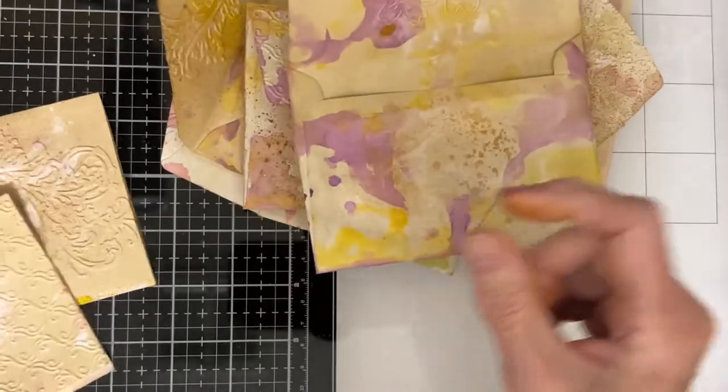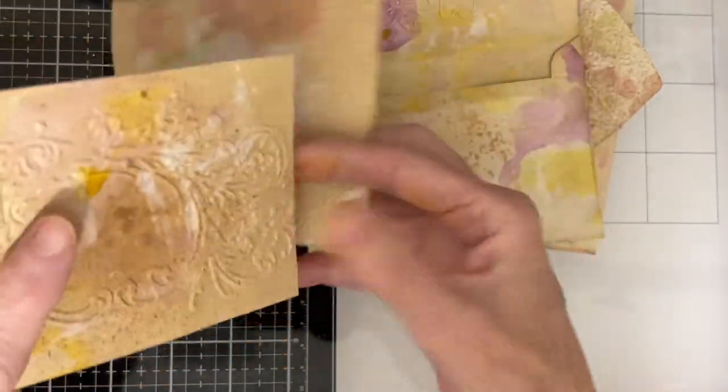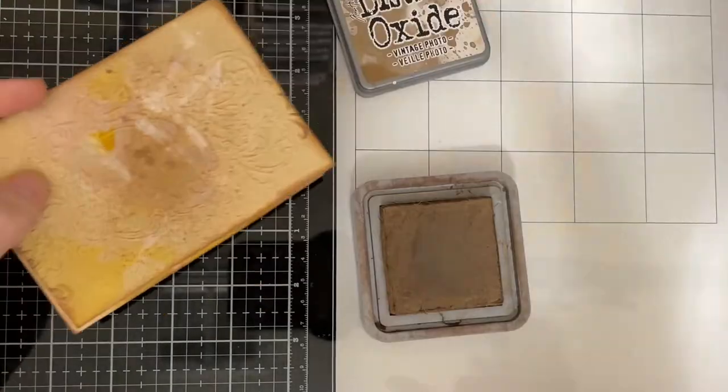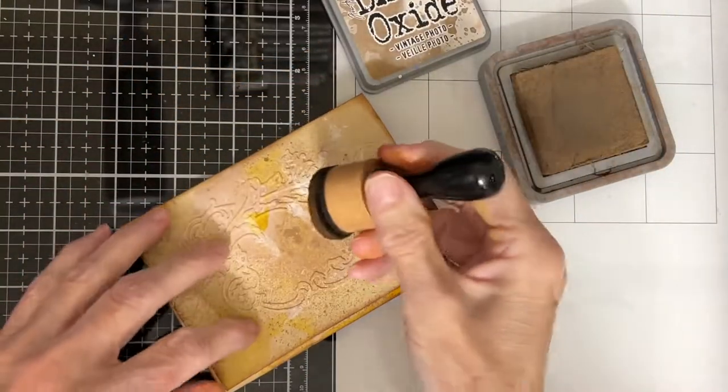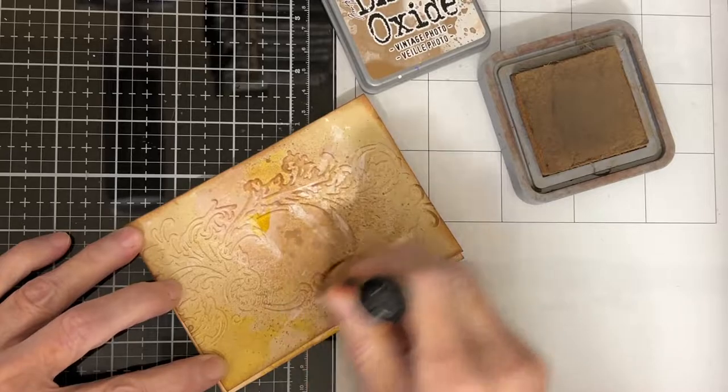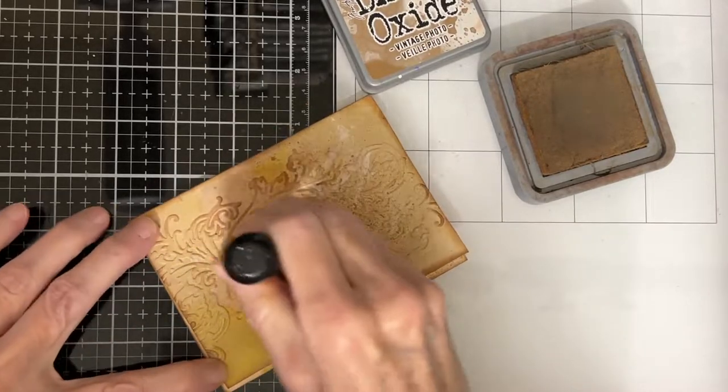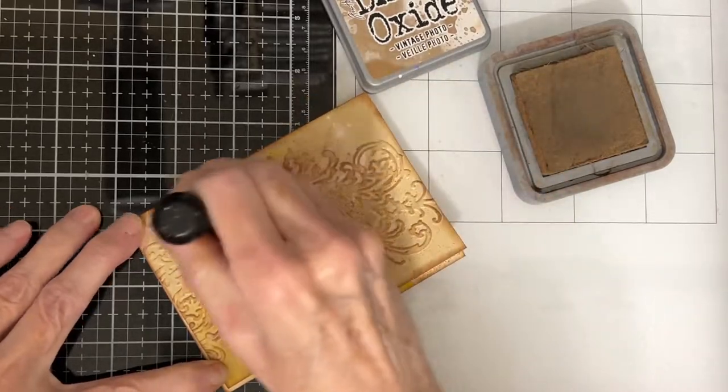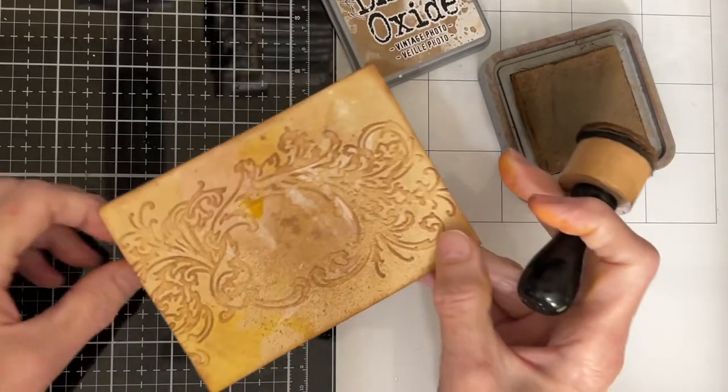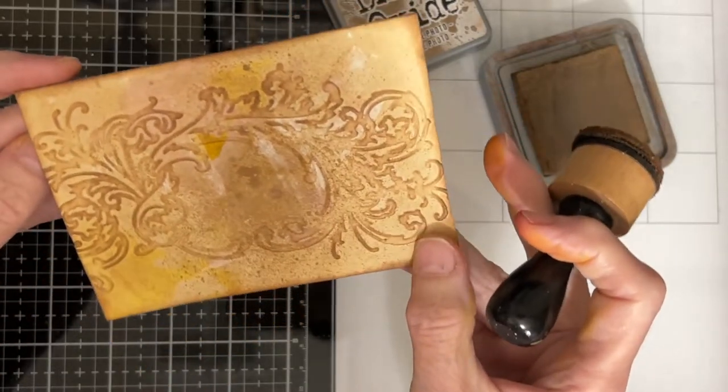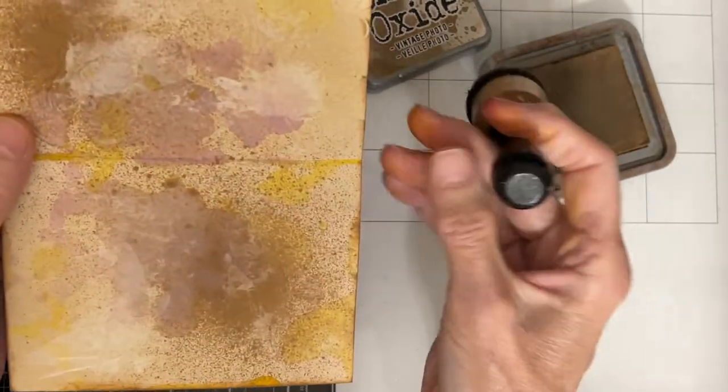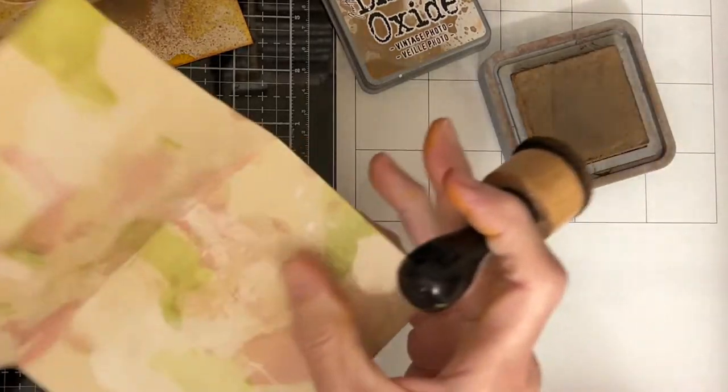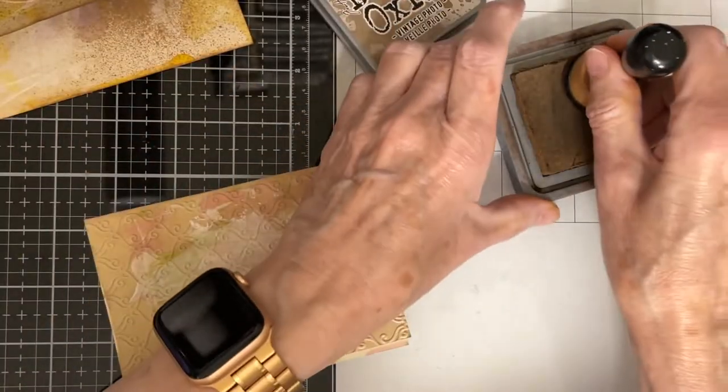And then I did some of the fronts of the notebook paper. So I'm going to show you how beautiful this looks when you just run a little bit of ink over the top. Isn't that gorgeous how that makes that stand out? And so what I've done is also inked around the edges. So I'm going to continue doing this.